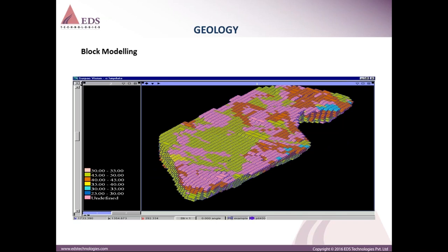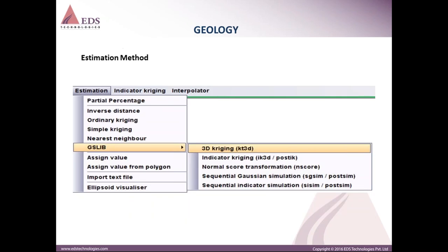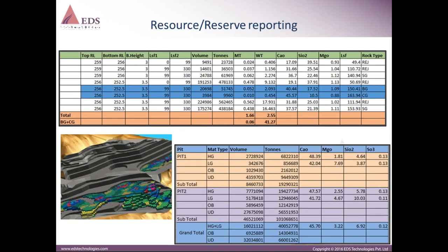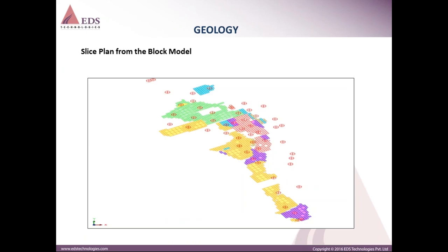This is an example of a block model: once the ore body is created, it is divided into mining blocks and resources are estimated. Blocks are colored based on the Fe grade of the deposit. Estimation methods available include Inverse Distance, Ordinary Kriging, Simple Kriging, Nearest Neighbor, and geostatistical library estimation methods. After estimation, resource and reserve reports can be generated, and slice plans extracted from the block model — showing grades available at a particular RL.